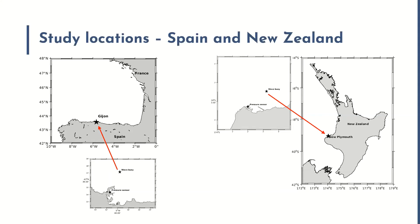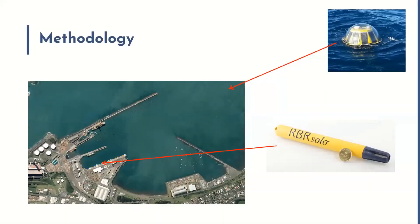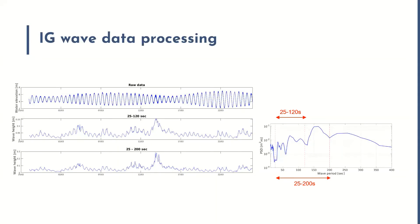The methodology involves having a wave rider buoy positioned offshore within about a kilometer of the port entrance, measuring wave spectra every hour. And at the berth we have a continuous measurement of pressure or water level at two hertz.